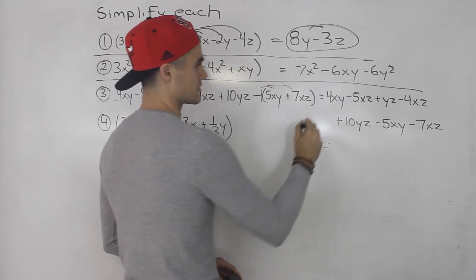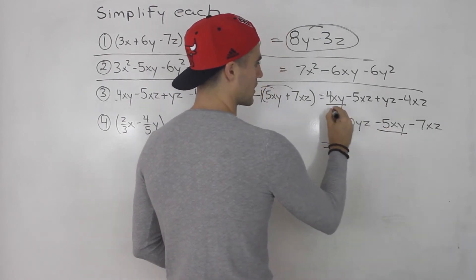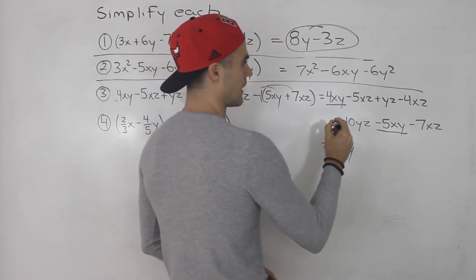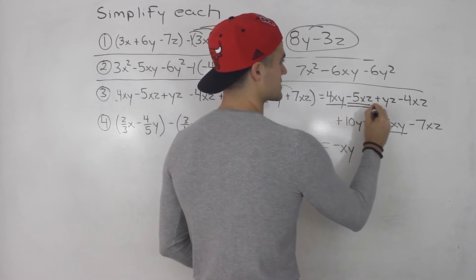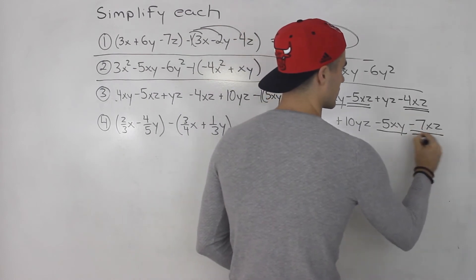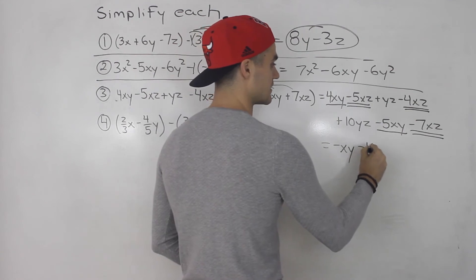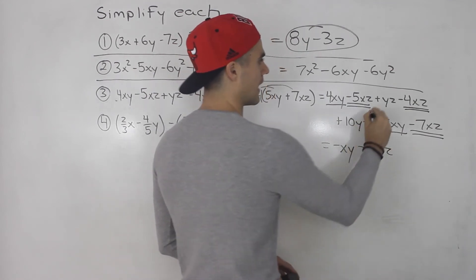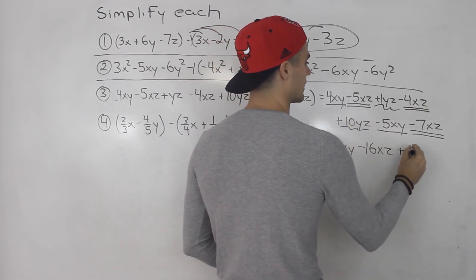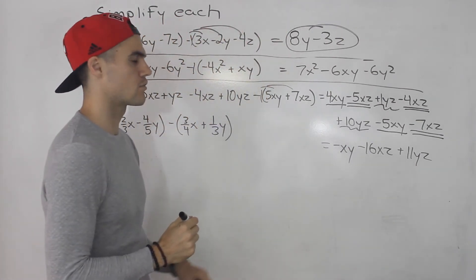Collecting like terms: 4xy and negative 5xy gives us negative xy. Then minus 5xz minus 4xz, and there's another xz — minus 5 minus 4 is negative 9, minus 7 gives us negative 16xz. And then 1yz plus 10yz gives us 11yz. So the final answer for number 3 is negative xy minus 16xz plus 11yz.